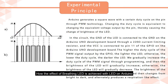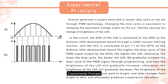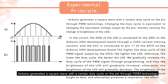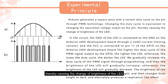How is the effect of a Breathing LED achieved with an LED on Arduino? Arduino generates a square wave with a certain duty cycle on the pin through PWM technology. Changing the duty cycle is equivalent to changing the equivalent voltage output by the pin, thereby causing a change in the brightness of the LED.